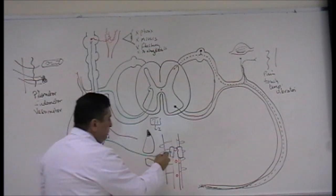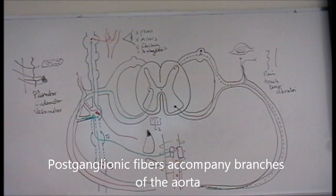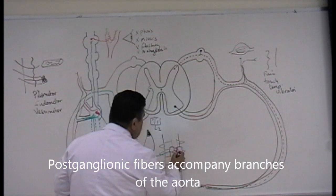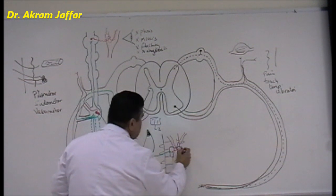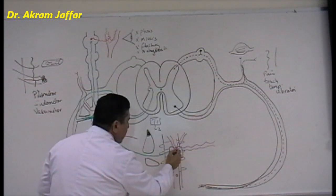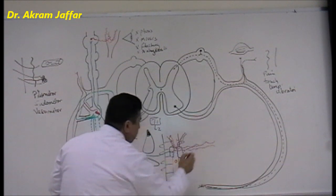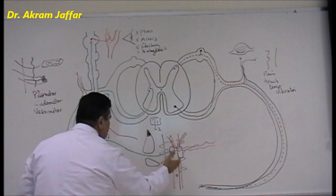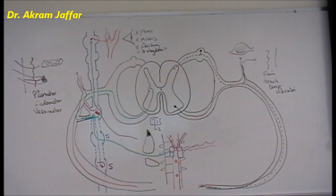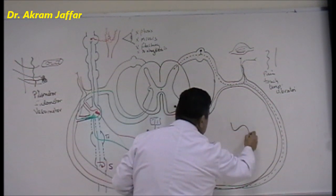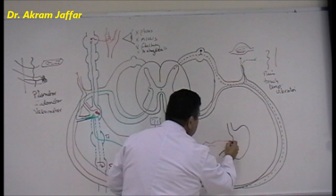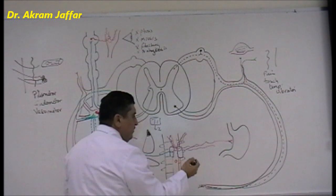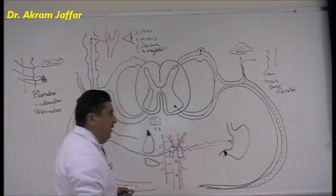The postganglionic fibers from the pre-vertebral ganglia accompany the branches of the aorta — for example, the hepatic artery to the liver, the left gastric artery to the stomach, and the splenic artery to the spleen. These postganglionic fibers are distributed to the abdominal viscera. In viscera such as the stomach or intestine, they inhibit peristalsis, are motor to sphincters like the pyloric sphincter, and are vasomotor.